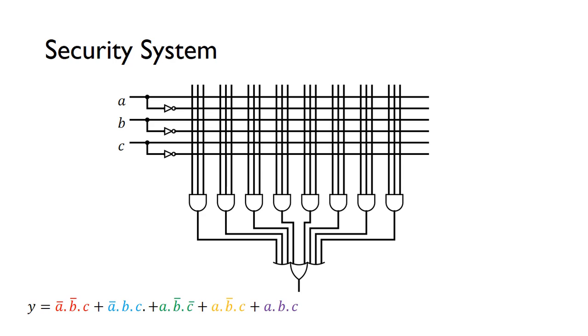For the first minterm, NOT A and NOT B and C, shown in red, we need to get NOT A so we put a connector here, and NOT B here, and C here.